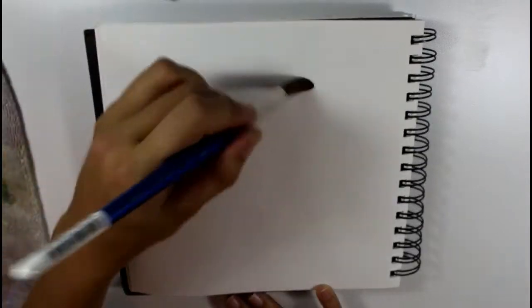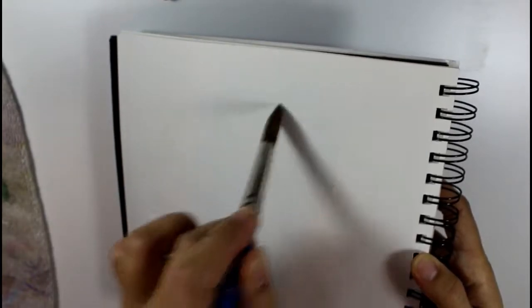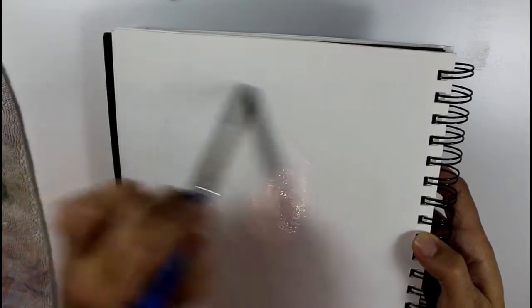The paint is going to flow wherever the water is, and this is just in my sketchbook. You can tilt your page if you want to see exactly where you have the water. Make sure you didn't miss any spots.